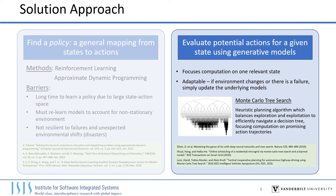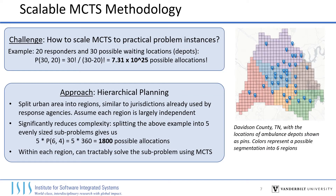Rather than learning a general policy offline, our approach is to instead perform online computation to evaluate potential actions for a given state using generative environmental models. This focuses computation on one relevant state and can adapt to environmental changes by updating the underlying generative models. An example of such an approach is Monte Carlo Tree Search, a heuristic planning algorithm which efficiently builds a decision tree in real-time by balancing exploration and exploitation. MCTS has been applied to several online planning problems such as autonomous driving. Since MCTS builds the decision tree online, it's challenging to scale it to realistic scenarios due to their computational complexity.